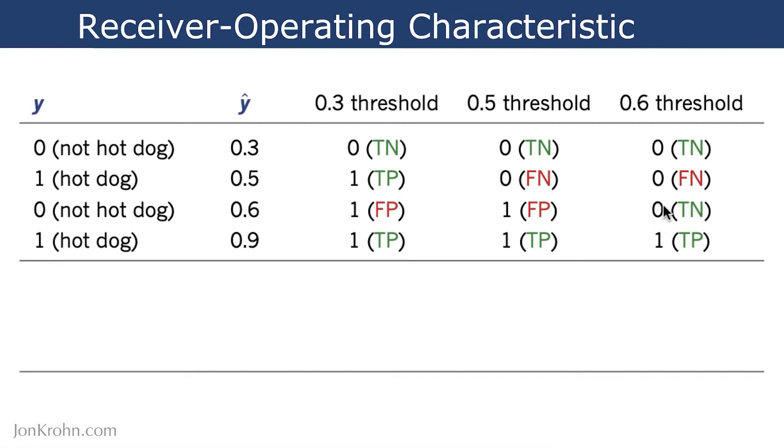But now, in this situation here, this y-hat of 0.6 is considered to be a negative by the algorithm. So it predicts that a hot dog is not there. And that's true. There isn't a hot dog there. So this is now a true negative.